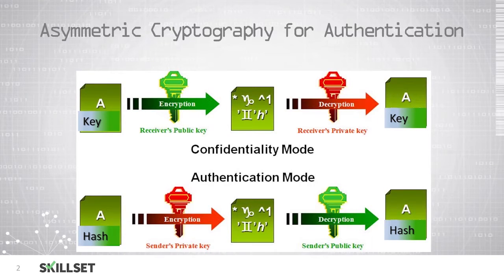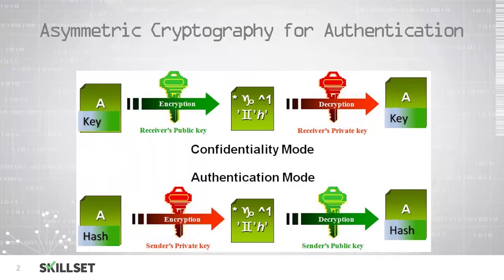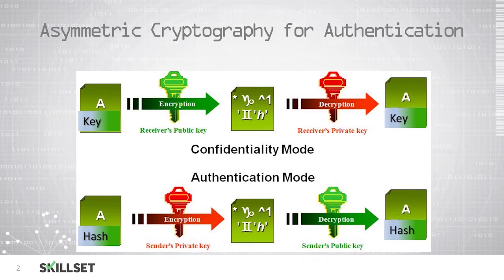We can also use asymmetric cryptography to authenticate the identity of an individual. At the bottom, we can see that the sender has a file they would like to send us. They generate a hash value for that file, then encrypt it with their private key, which only they have access to. They can then transmit the data to us over the internet or using some other medium. Once we receive the data, we can decrypt it using the sender's public key, which is publicly available. We know that anything we can successfully decrypt using the sender's public key must have been encrypted with the sender's private key, which only they have access to. Therefore, we can verify that the sender was the one who encrypted the data. And when we can verify that the hash value matches, we know that the data has not been tampered with.